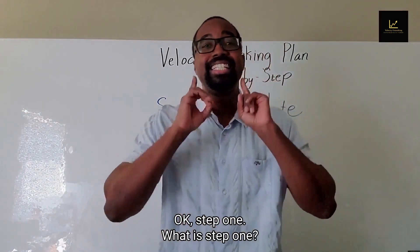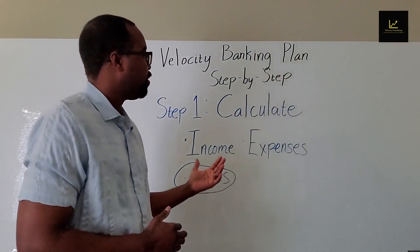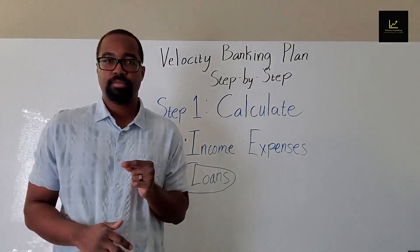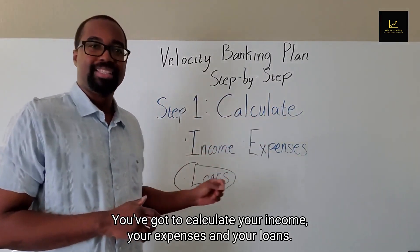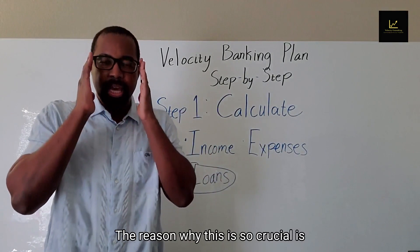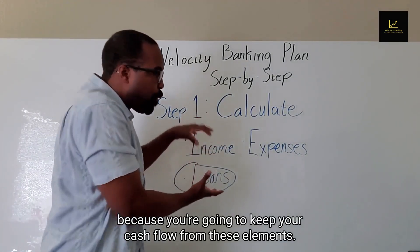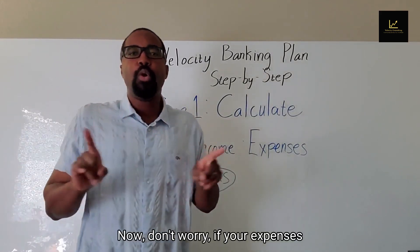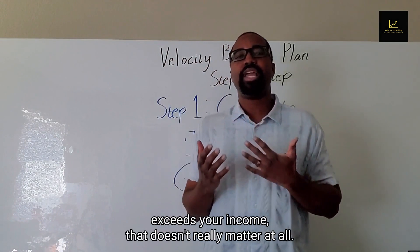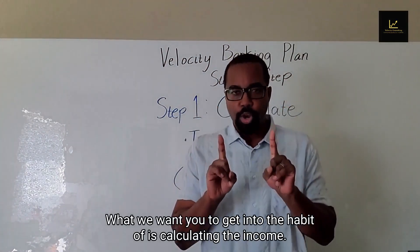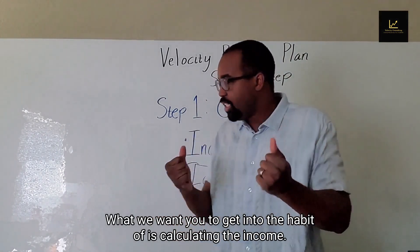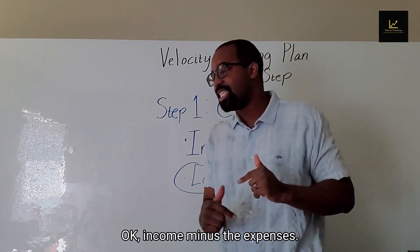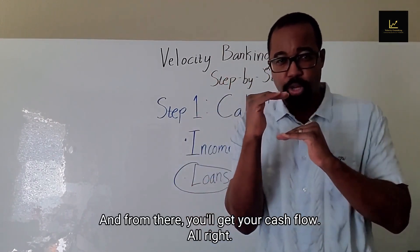Step one: you've got to calculate your income, your expenses, and your loans. This is so crucial because you're going to get your cash flow from these elements — in particular from the income and the expenses. We want you to get into the habit of calculating income minus expenses, always in that order. From there you'll get your cash flow.